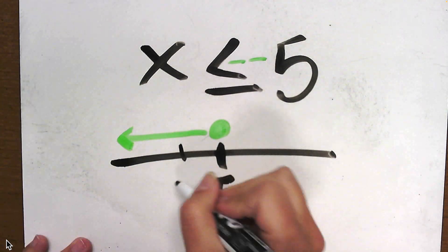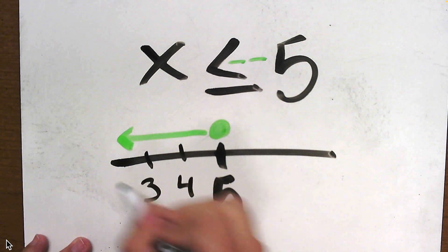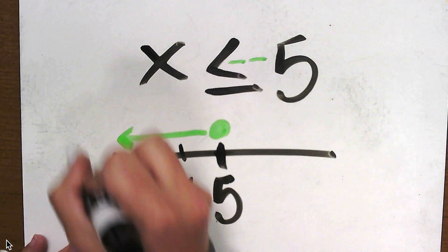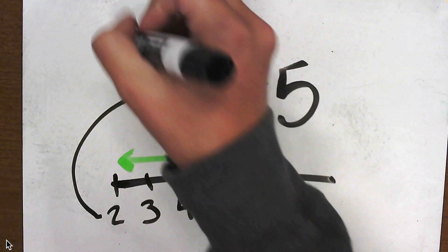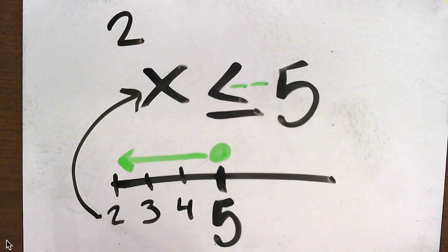That way, all the numbers on this side are going to be able to fit into x. That means if I said x was 2, that would work. If I said x was 3 or 4, that would also work. If I said it was a negative number, that would work because it is less than 5.